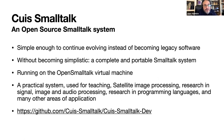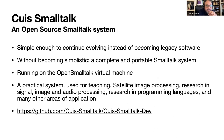Cuis is an open source Smalltalk system forked from Squeak many years ago. The idea is to make it simple enough so it can evolve and not become legacy software. It runs on the same OpenSmalltalk machine as the Squeak family, and it is a very practical and useful system used for many applications.